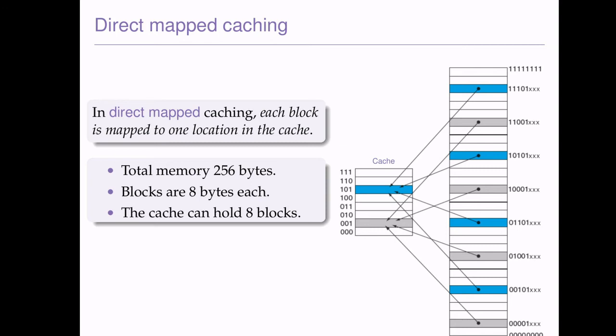Let's have a look at direct map caching. In direct map caching, each block is mapped to one location in the cache. So each block has one location, and we need to be able to represent that location. For example, if we have 256 bytes total memory — that is 2 to the power of 8 — we're using 8-bit addressing, so memory addresses are 8 bits. Now, if blocks are 8 bytes each, we need to be able to represent each block with a sort of address of its own.